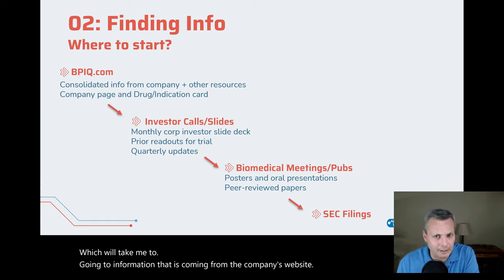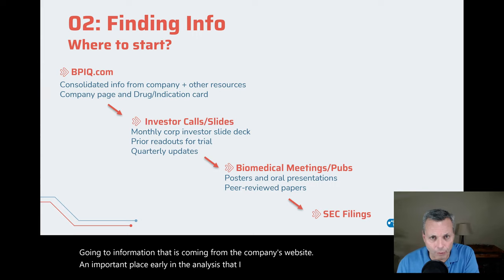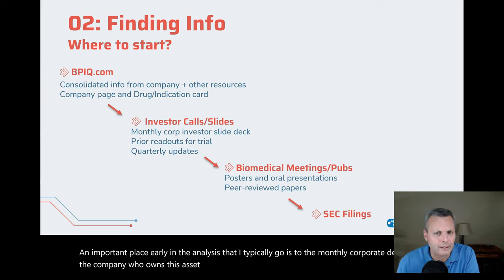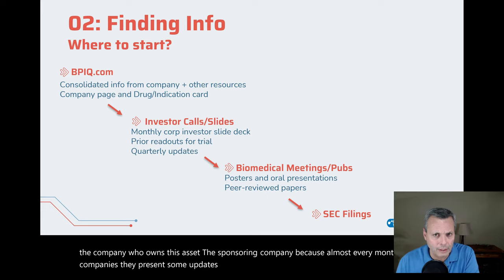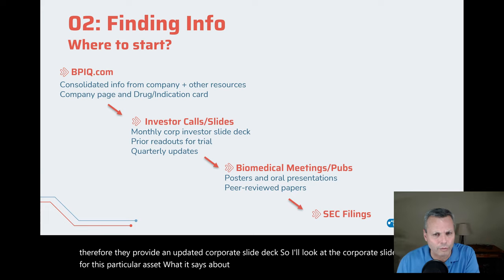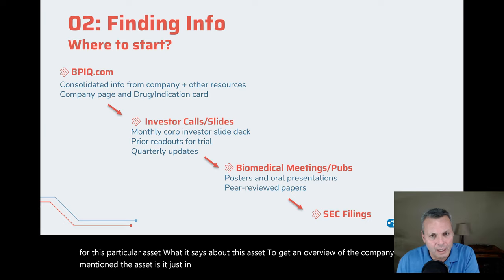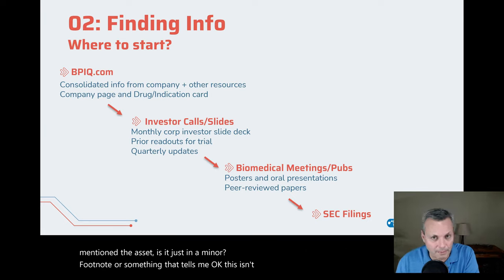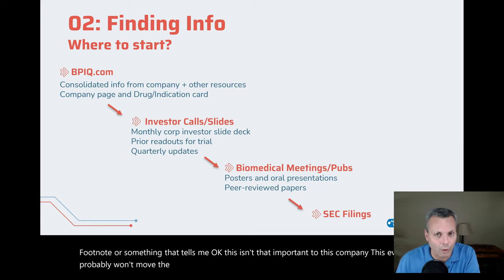An important place early in the analysis is the monthly corporate deck for the company that owns the asset. Almost every month these companies present updates at investor calls and provide an updated corporate slide deck. I'll look at what it says about this particular asset to get an overview — does the company even mention the asset? Is it just in a minor footnote? That tells me this isn't too important to the company and the event probably won't move the stock price too much. Or are half the slides in the company deck about this particular asset?